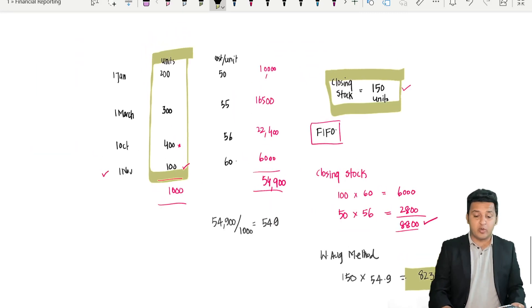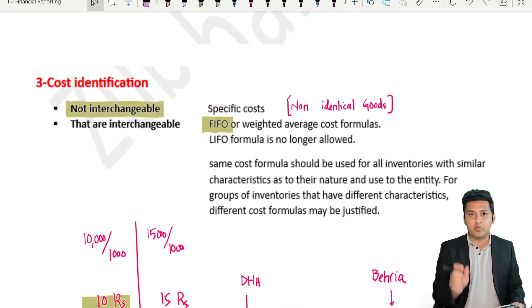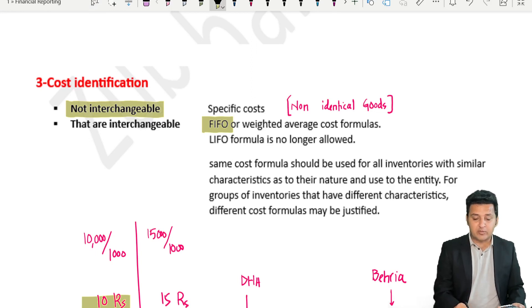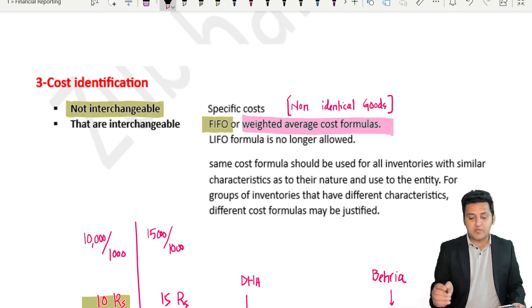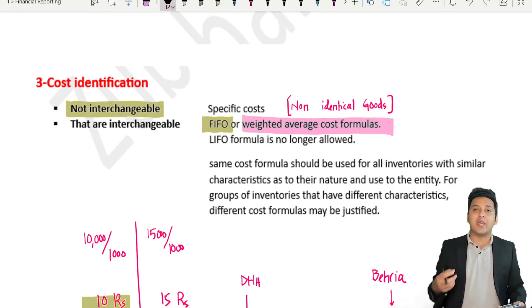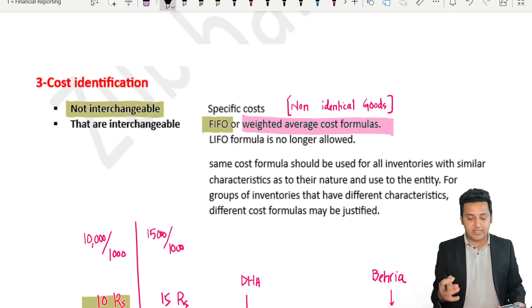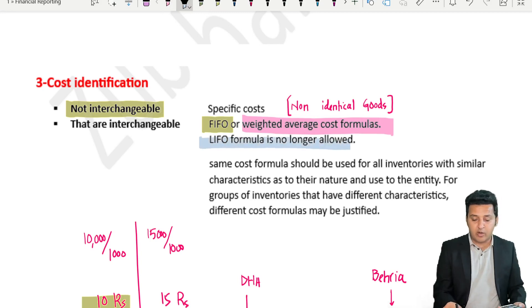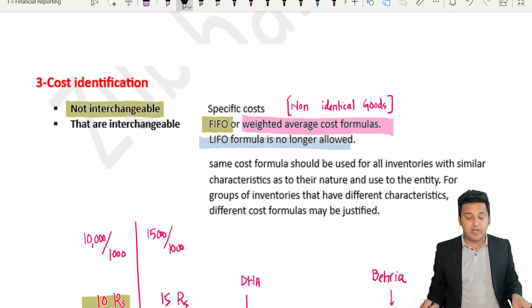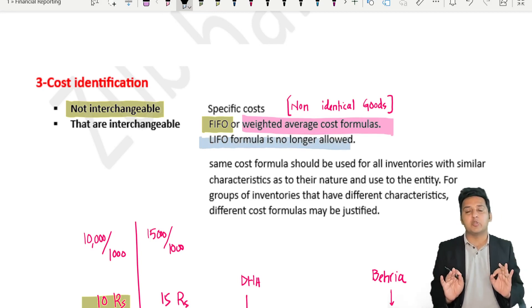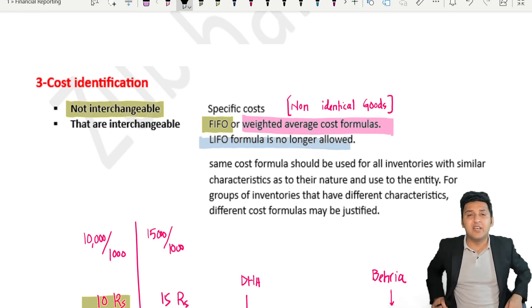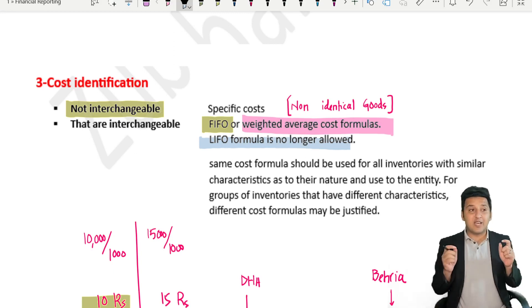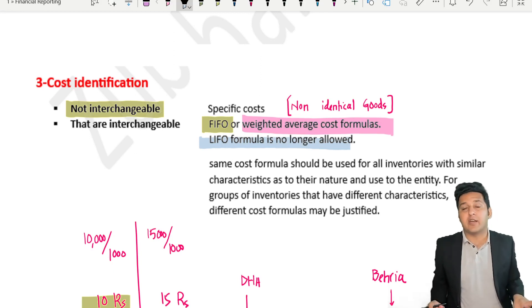Remember: when goods are not interchangeable, use specific cost for that unit. When goods are interchangeable, apply FIFO or weighted average. An important MCQ point: IAS 2 no longer allows LIFO. LIFO — last in first out — is no longer an available method.